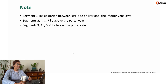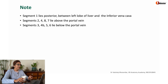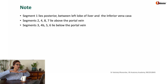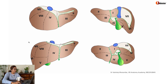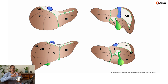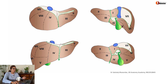Note that segment 1 lies posteriorly between the left lobe and the inferior vena cava. Segments 2, 4, 8, 7 are above the portal vein; segments 3, 4, 5, 6, 7 are below the portal vein. If you look at these images from above, you will see certain segments; from below you will see different segments because they are divided into superior and inferior. If you go from anterior, you will not see segment 1 at all. The segmentation has to be understood in three dimensions, not in a single diagram.